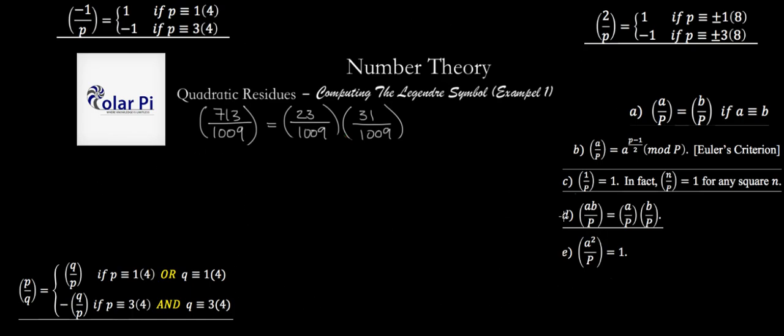So once you know everything on this page, then we can finally finish the job that we started in computing 713 over 1009. We started working on it in the video about the properties of the Legendre Symbol. And there we said that we can use this property to get started in this fashion. But then none of the properties told us where to go from here. And so we said we're going to enlist the help of The Law of Quadratic Reciprocity Part 1 to help us figure out what this is and what this is.